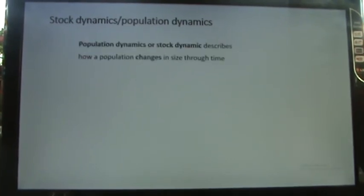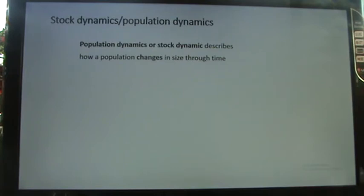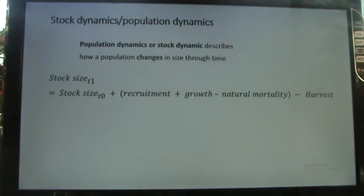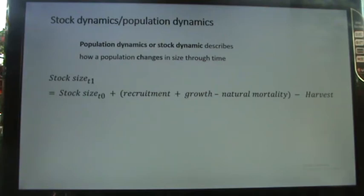Let's start with stock dynamics, or population dynamics in fisheries biology. Stock dynamics describes how a population changes in size through time. It can be expressed as: stock size today (T1) equals stock size in the previous period (T0) plus recruitment — the number of new young fish entering the population — plus growth in weight and/or length, minus natural mortality from predation, disease, old age, and minus harvest.